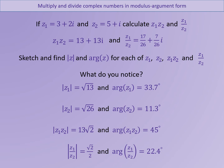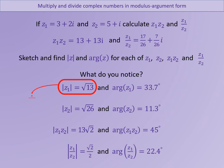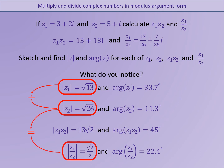So let's see if we can see any connection between those numbers. The first connection is that if you take the modulus of Z1 and the modulus of Z2 and multiply those two numbers together — root 13 multiplied by root 26 — you'll find the answer is 13 root 2, which is the modulus of Z1·Z2. Similarly, if we divide those two moduli, root 13 divided by root 26, the answer is root 2 over 2, which is the modulus of Z1 over Z2.